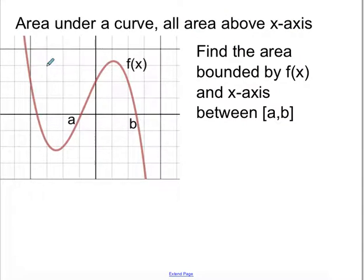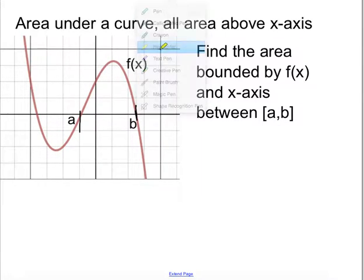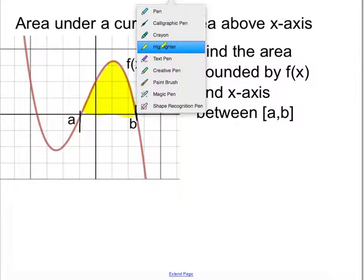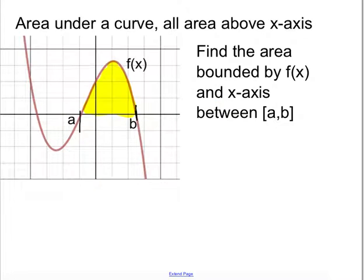We want to find the area bounded by this function f(x) and the x-axis between a and b — this entire yellow region. We've talked about it in class: the definite integral is a way to represent the area under the curve. We can do this by taking the integral from a to b, where a is the lower limit and b is the upper limit, of f(x) dx.